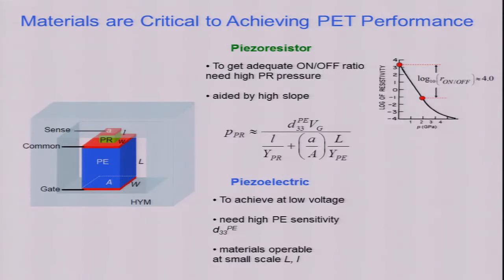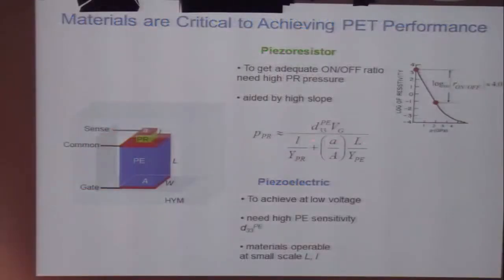It depends on VG, the gate voltage. Obviously, the higher the D33PE, the smaller the needed gate voltage. Then the other obvious thing, these are mechanical properties. This is the area ratio. You see it depends on scale. The smaller the scale, then the lower the voltage. It has the typical scaling we see in Denard scaling.